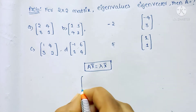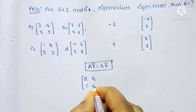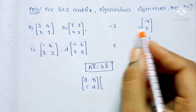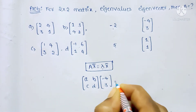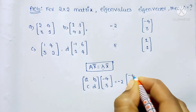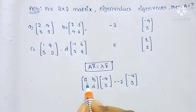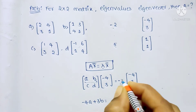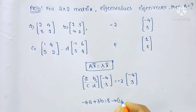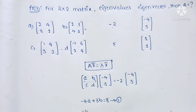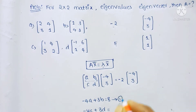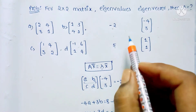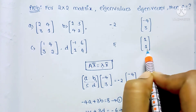Since this is a 2×2 matrix, we write A = [a, b; c, d] with unknown constants. For λ = -2 and eigenvector [-4, 3], expanding gives: -4a + 3b = 8 (equation 1) and -4c + 3d = -6 (equation 2).